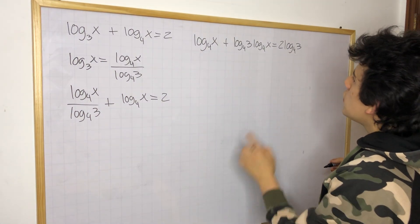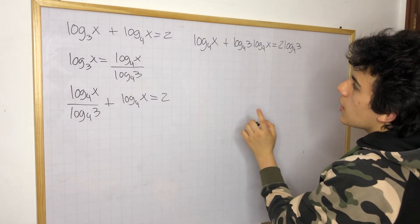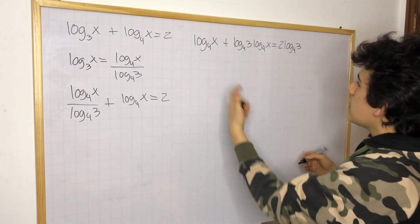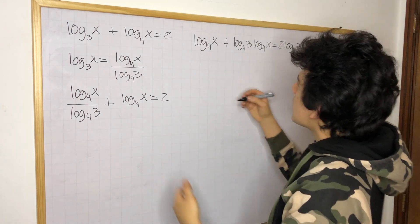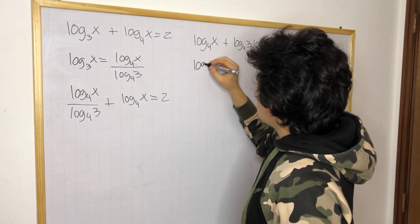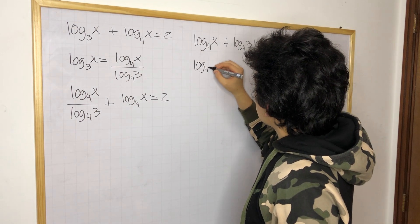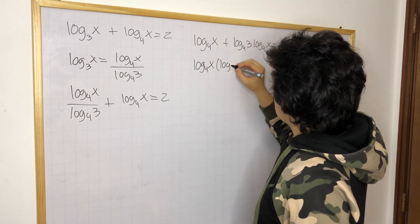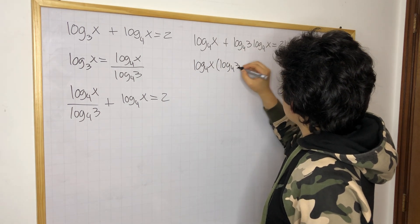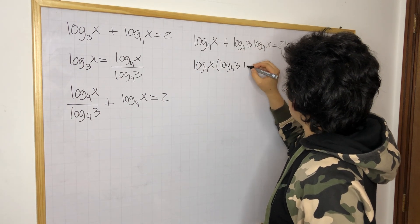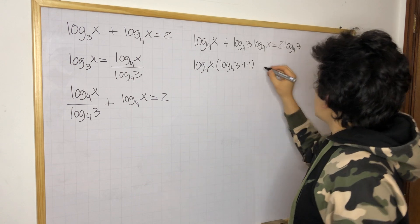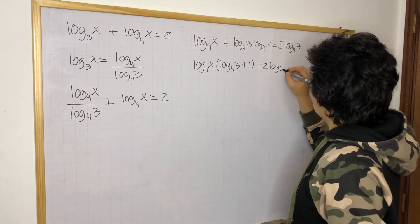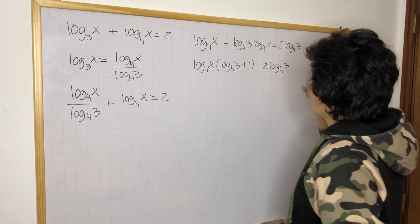Now what we're going to do is — you can see that we have a common factor of log base 4 of x — so we can take that out and keep going. So we can say log base 4 of x times log base 4 of 3 plus 1, and this is equal to 2 times log base 4 of 3.